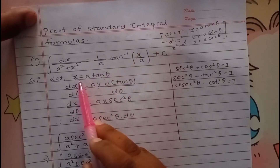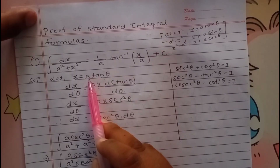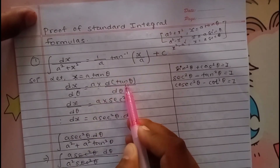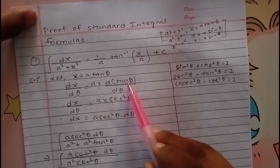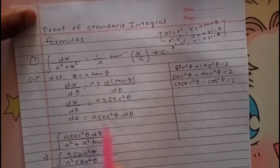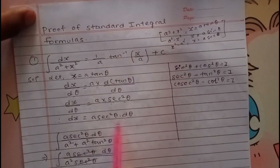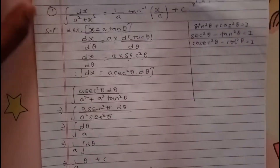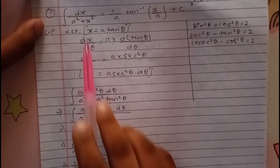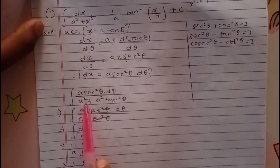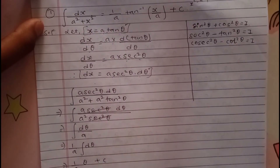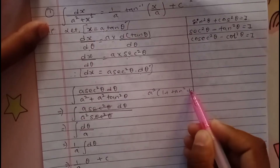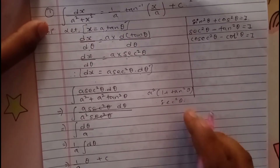For a² plus x², we let x equal a·tan θ so it becomes easily integrable. We differentiate x with respect to θ, so dx/dθ equals a·sec²θ. So dx equals a·sec²θ·dθ. Now substituting x² — since x equals a·tan θ — x² becomes a²·tan²θ.